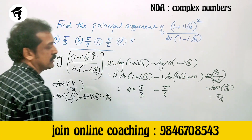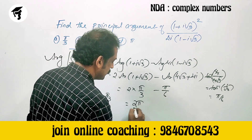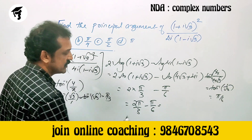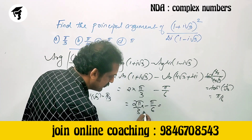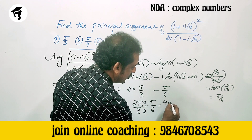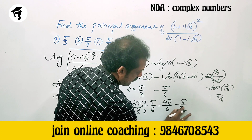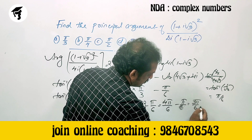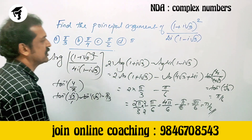So we get 2 into π/3 minus π/6, that is 2π/3 minus π/6, which equals 3π/6. Simplifying, the answer is π/2.